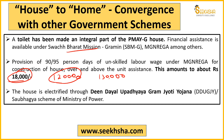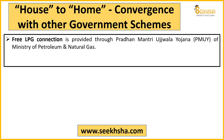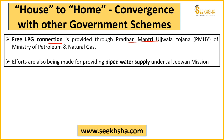Electrification of the houses being built will be done under the Deen Dayal Upadhyaya Grameen Jyoti Scheme or the Saubhagya scheme of the Ministry of Power. Free LPG connections will be provided under Pradhan Mantri Ujjwala Yojana by the Ministry of Petroleum and Natural Gas. Piped water supply has been linked with the Jal Jeevan Mission. So various schemes have been linked so that their financial assistance is also provided as add-on benefits.